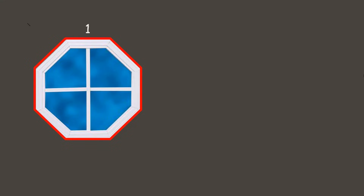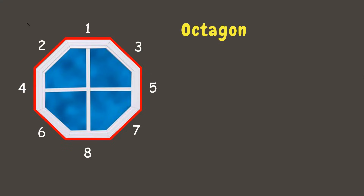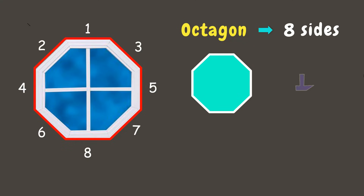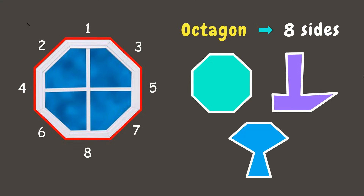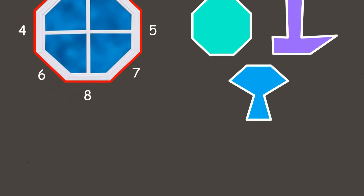Let's go to the next one. We have a window. This window has eight sides and a polygon with eight sides is called an octagon. An octagon has eight sides and eight angles. Here are other examples of octagon.